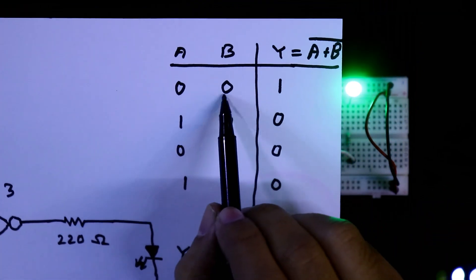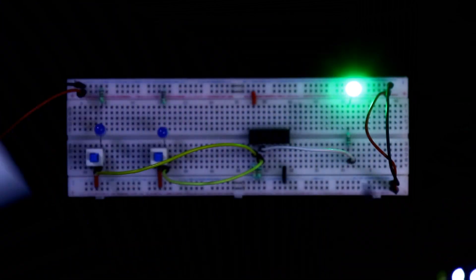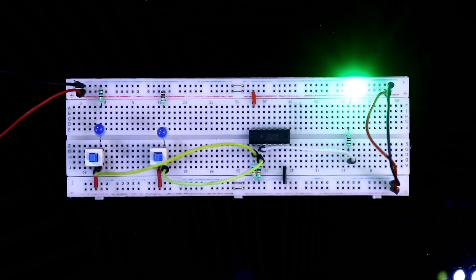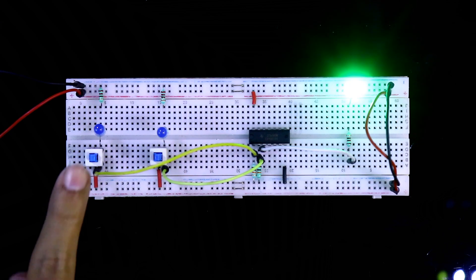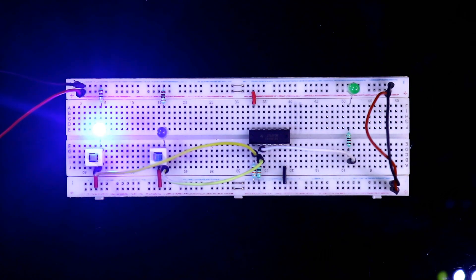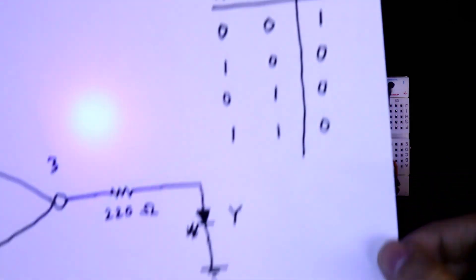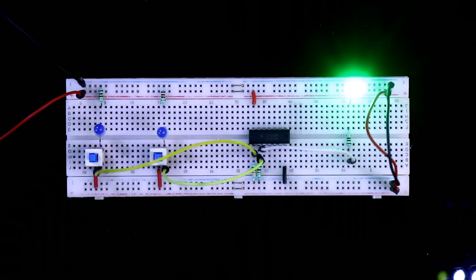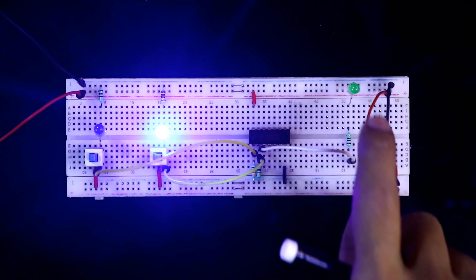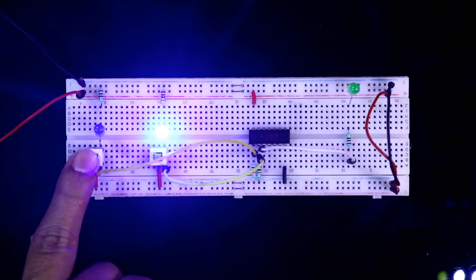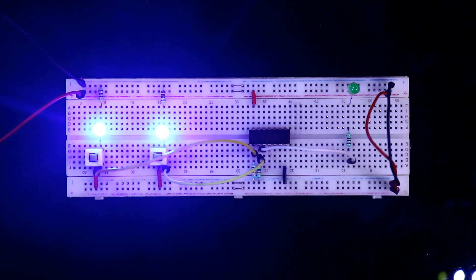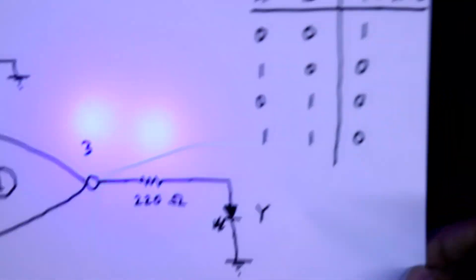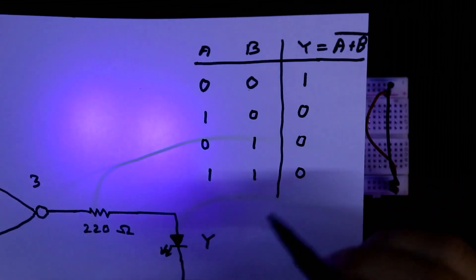Now see the truth table. A 0, B 0 we should get output. And A 0, B 0 we are getting the output. When A 1, B 0 output is 0. A 0, B 1 we are getting 0. And when both are 1, we should get 0. So this is how we have verified the truth table.